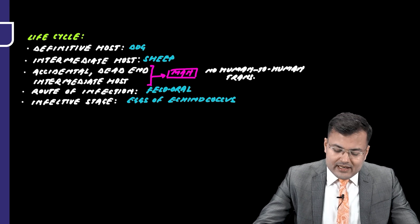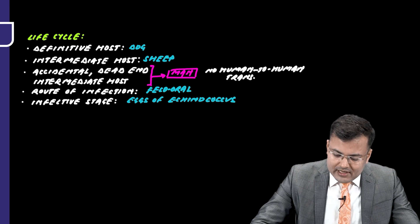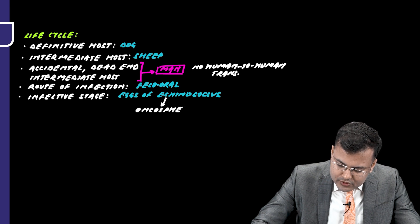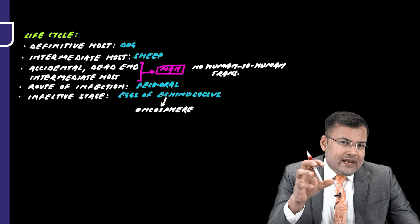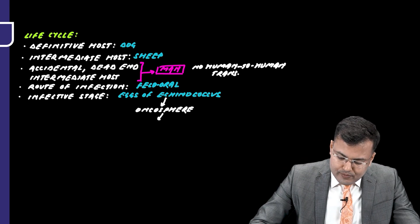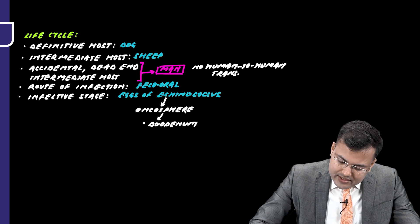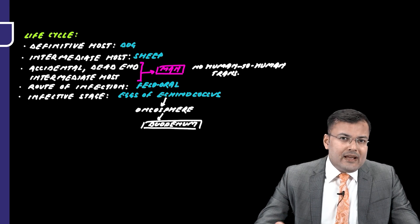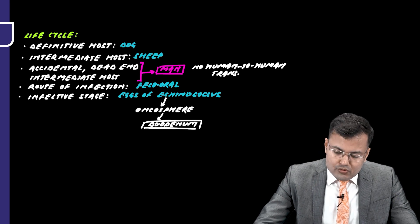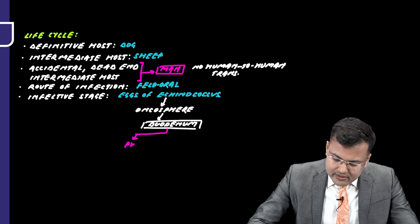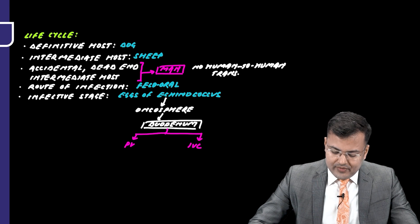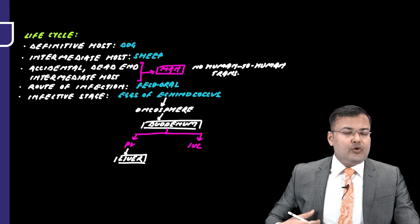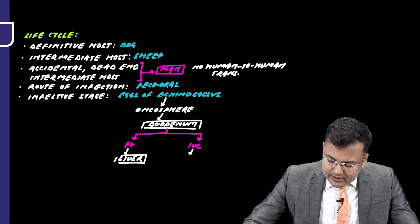When the eggs are ingested, they develop into a larva called hexacanth or onchosphere. This larva has hooklets and penetrates the mucosa in the duodenum, then enters systemic circulation via the portal vein — mainly reaching the liver — or via the IVC going to the right atrium, right ventricle, and then the lungs. So the most commonly involved organ is the liver, and the second most common is the lungs.